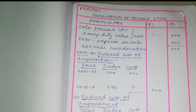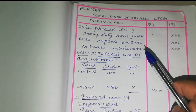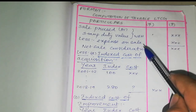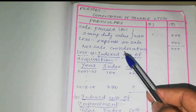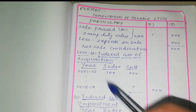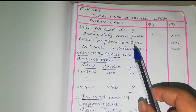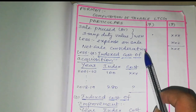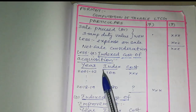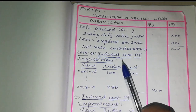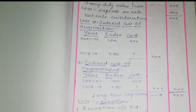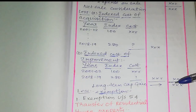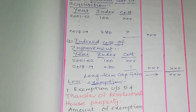Now we will see the format to compute Long Term Capital Gain. If you are given a Stamp Duty Value, we take the Sale Proceeds or Stamp Duty Value, whichever is higher. We then deduct expenses on sale. For long term capital gains, we deduct the Indexed Cost of Acquisition and Indexed Cost of Improvement. If we have a long term capital gain, we can claim exemptions.